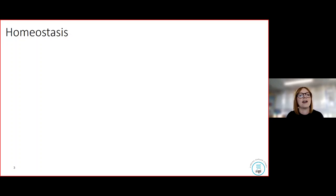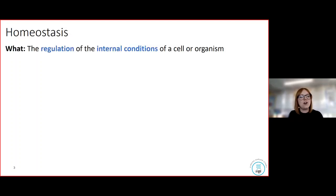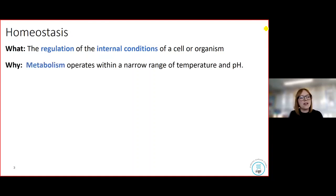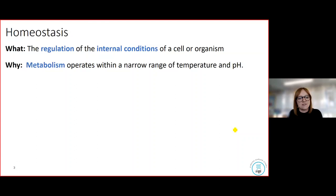Homeostasis is the regulation of the internal conditions of a cell or organism. It's all to do with making sure our internal conditions are suitable to ensure our metabolism works to the best of its ability. We know that enzymes operate within a very narrow range of temperature and pH, so it's really important that we maintain that narrow range inside the body so our enzymes can work effectively.